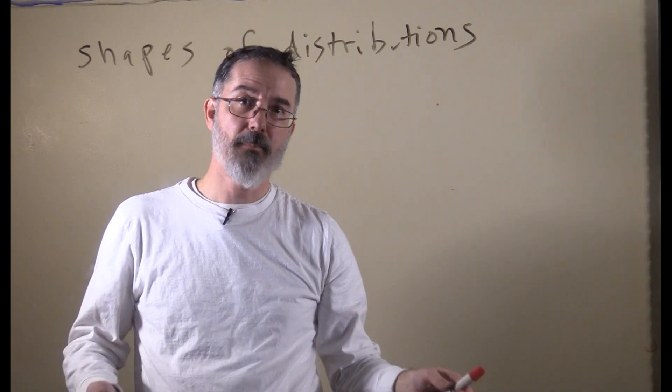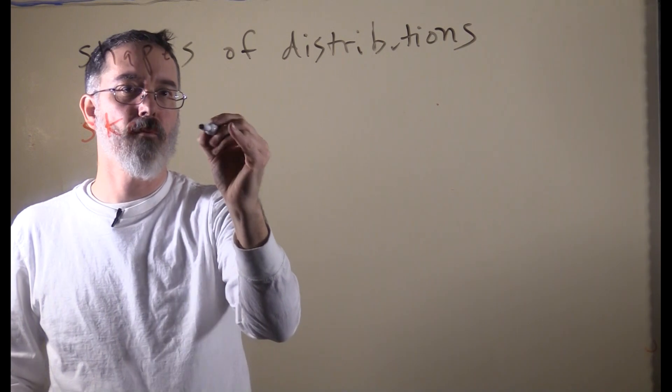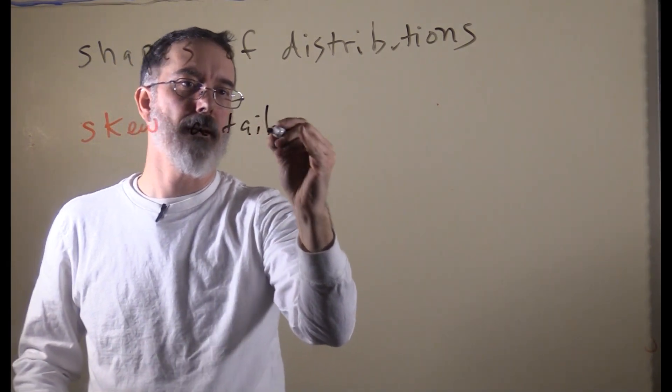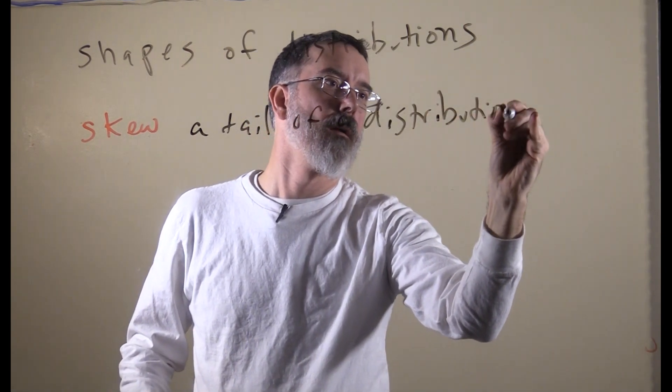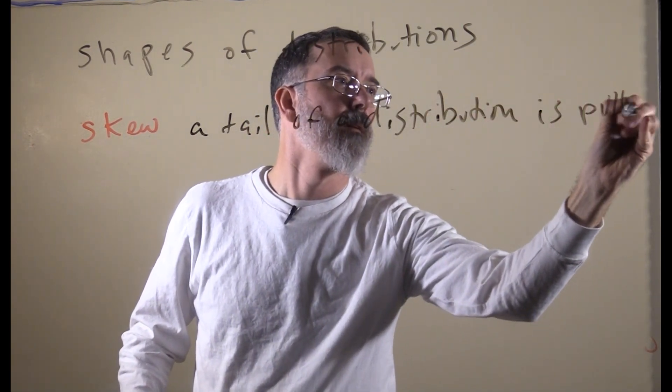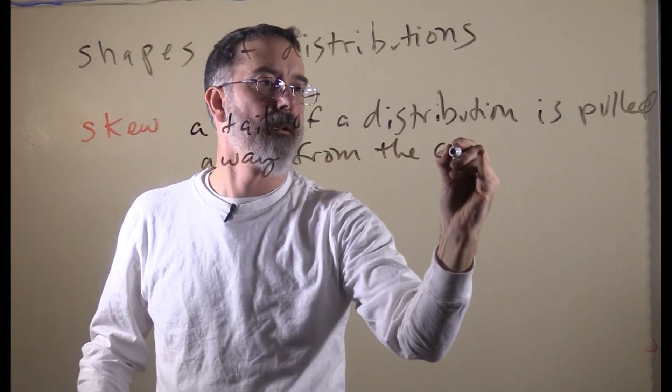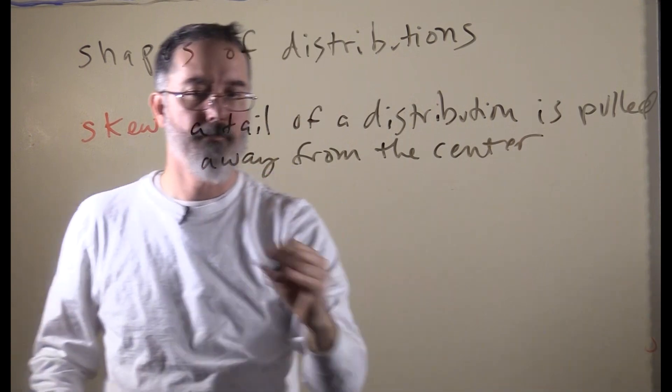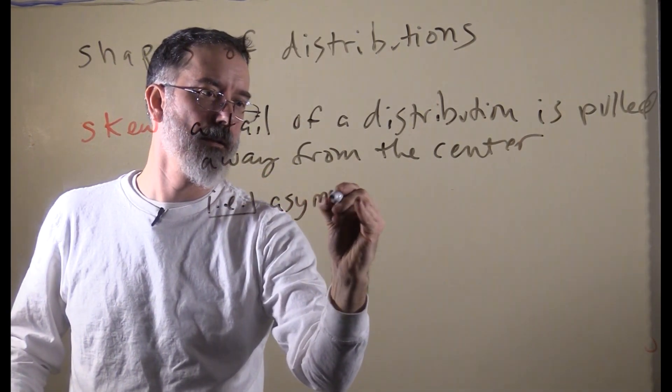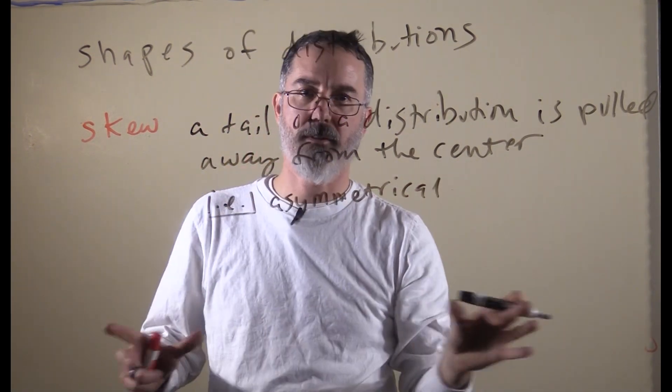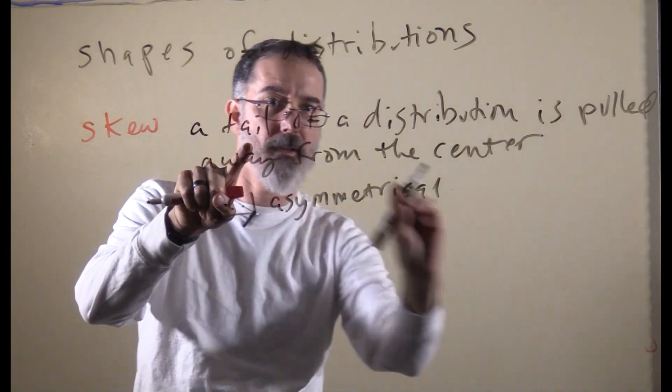Another important feature of the shapes of distribution is skew. Skew is when a tail of a distribution is pulled away from the center. It is always the case that it is an asymmetrical distribution. You can think about that being when the tails are pulled out.